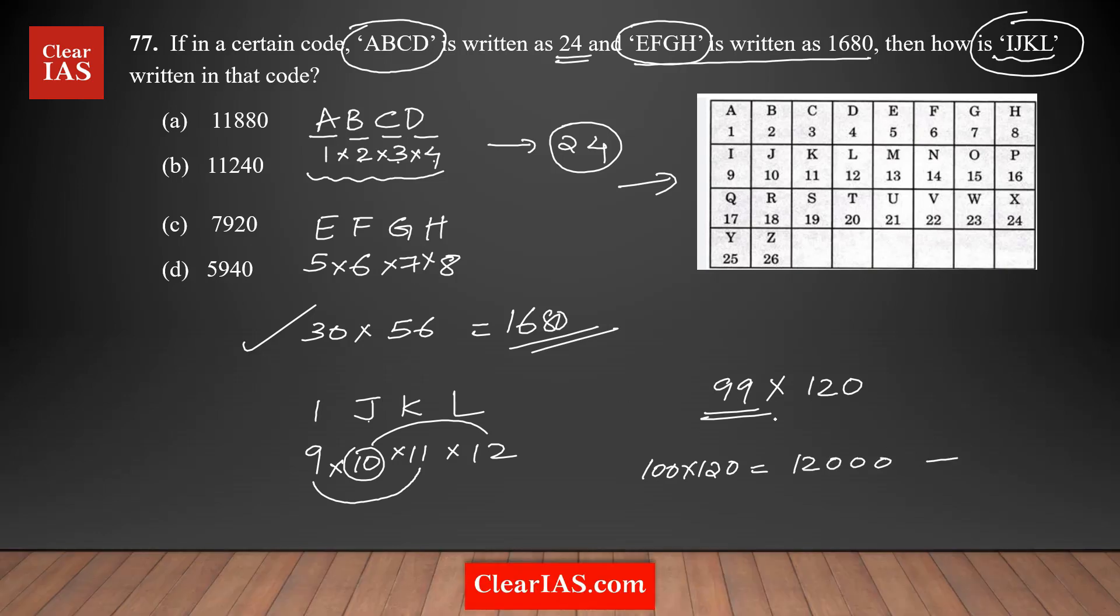I know that 100 times 120 equals 12,000, and from that if you subtract 120, your answer is 11,880, which is close to this number. So option A is the right answer.